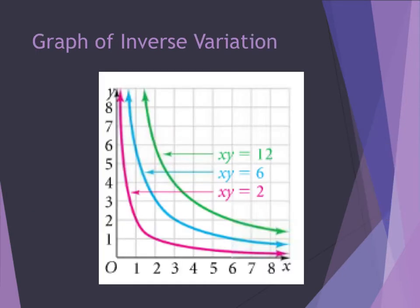Unlike the linear curve of a direct variation equation, inverse variation actually has a curve to it. If you look at this, you have your green line, your blue line, and your pink line. The smaller the number, the closer to the x and y axis these graphs are. The larger the number, the farther it gets away. Anytime you have a graph with this kind of shape, you should know that this is inverse variation.